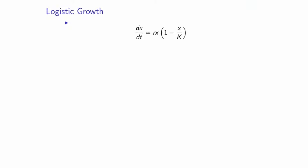Before we introduce our first epidemic model, we're going to review one of the most basic models of population dynamics. You've seen versions of this model when we discussed interacting species. This model is called the logistic equation, and here we're assuming that x(t) is a state variable denoting population size or density. x is a function of t, and we have two parameters: r and K.